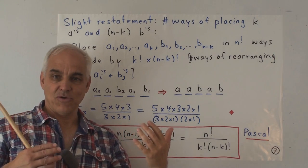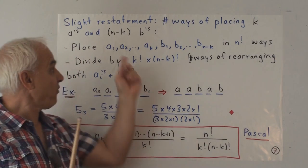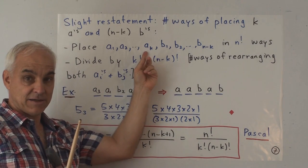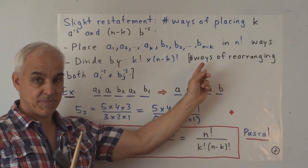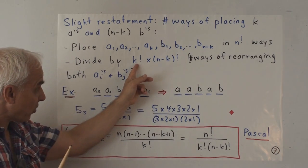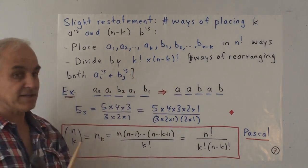n for the first one times n minus 1 for the second all the way down to 1 for the last one. Now, what we have to do then is we have to divide by the number of ways of rearranging the a's multiplied by the number of ways of rearranging the b's. So we have to divide by k factorial times n minus k factorial.